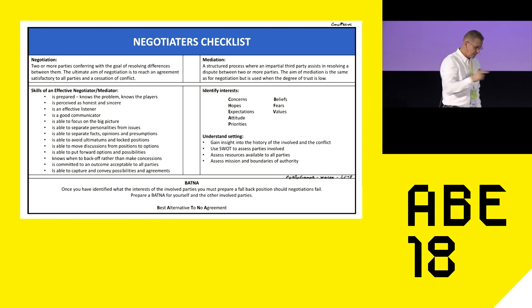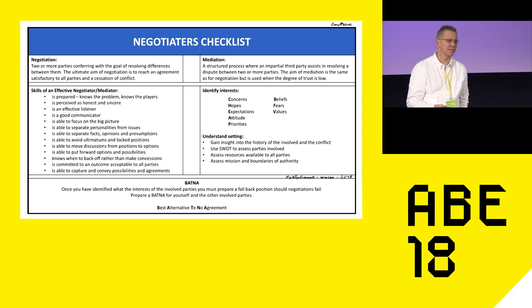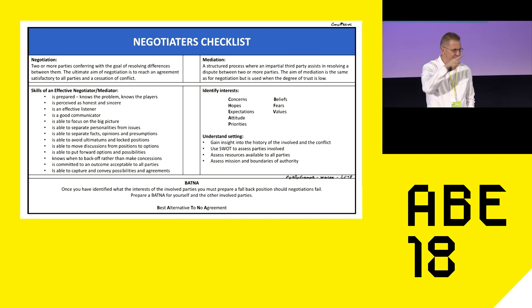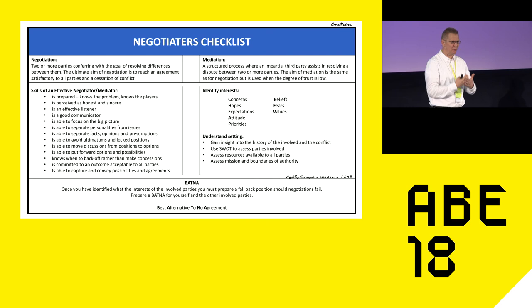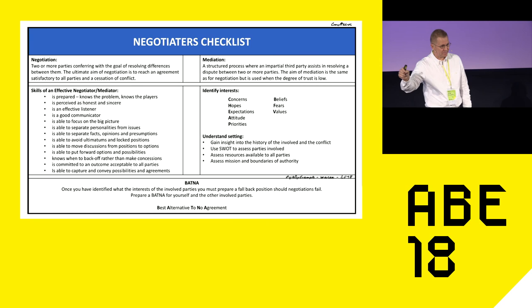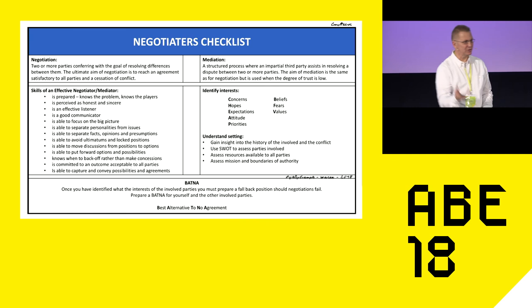One last thing — BATNA: Best Alternative To No Agreement. If you're going into negotiation with a stakeholder trying to win them over, be very careful about pushing for end states too early. Up front, think about how you can get out of the situation if you start to get deadlocked, because once you're deadlocked you have to put a lot more effort into resolving things afterwards. What is the best alternative to no agreement — not only for you but also for your opponent? In many cases it's very important to make sure the stakeholder opposing you can save face, because if they lose face they will be even more deadlocked.